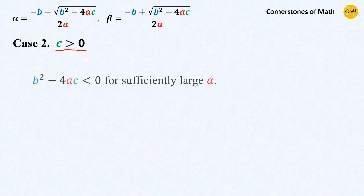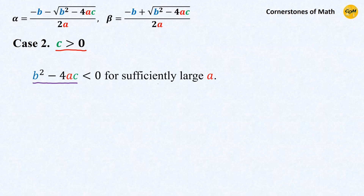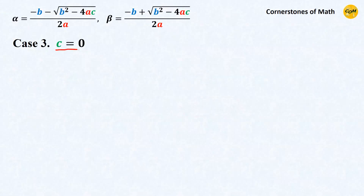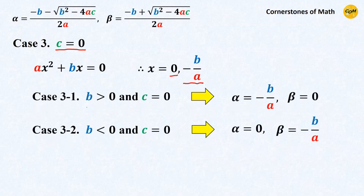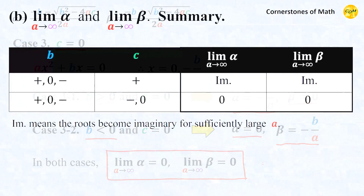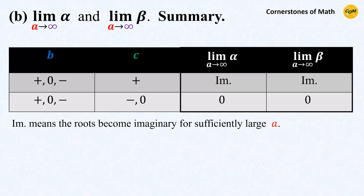When c is positive, b squared minus 4ac becomes negative when a becomes sufficiently large, meaning both roots eventually become imaginary for sufficiently large a. Finally, when c equals 0, the two roots are 0 and minus b over a. Whether b is positive or negative, the limits of both alpha and beta converge to 0. So in the end, we obtain a simple table for the limit as a approaches infinity. As you can see, the sign of b does not matter.